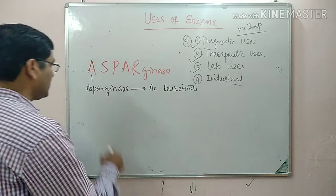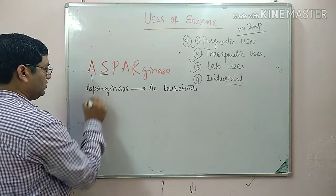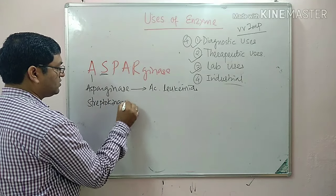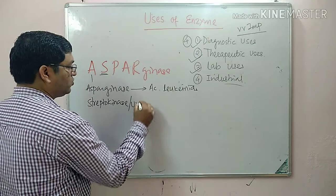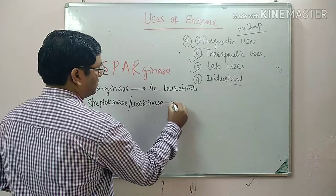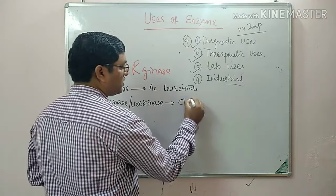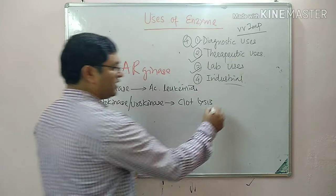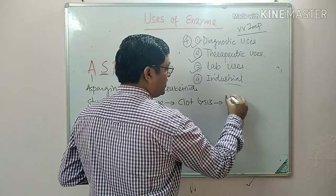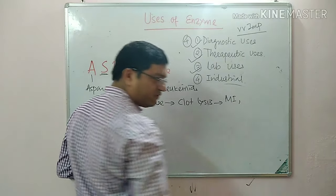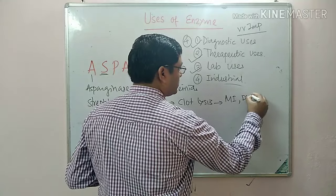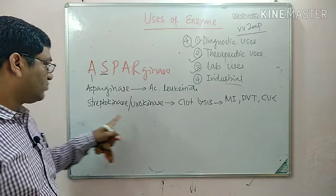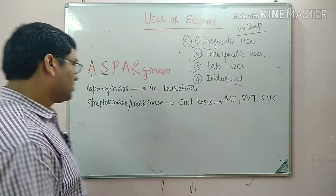The second group includes streptokinase and urokinase. They are used for lysis of clots — they are thrombolytic agents used in myocardial infarction, deep venous thrombosis, and cerebrovascular episodes.